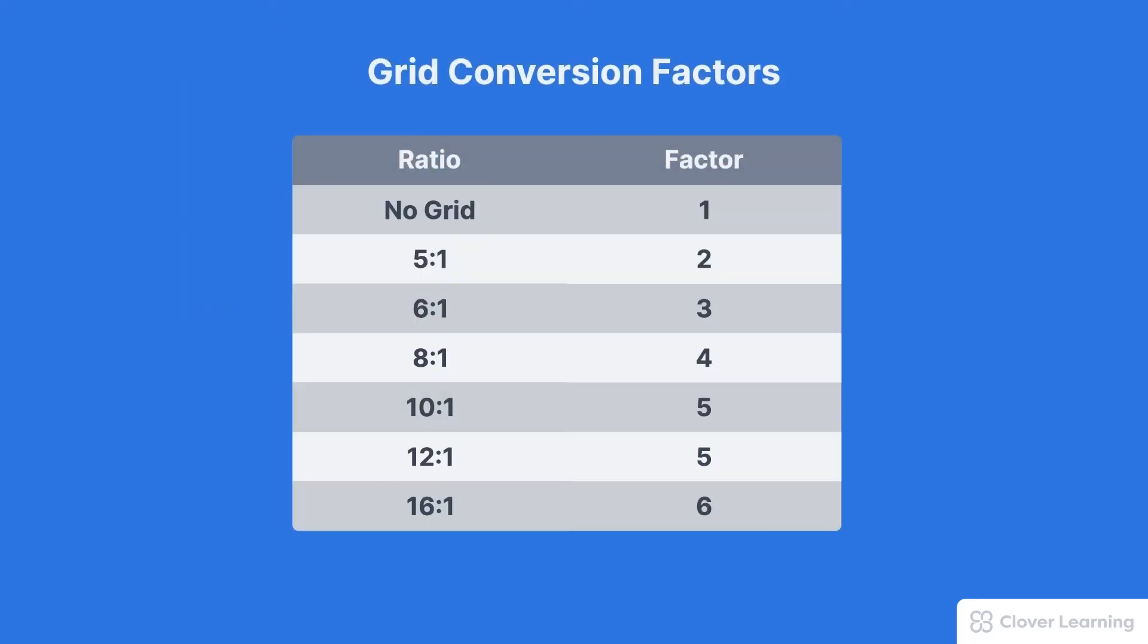Here's the average grid conversion factors that we must know to use this formula. No grid is equal to 1. 5 to 1 is equal to 2. A 6 to 1 grid is 3. 8 to 1 equals 4. 10 to 1 is 5. 12 to 1 is also 5. And a 16 to 1 grid has a grid conversion factor of 6.